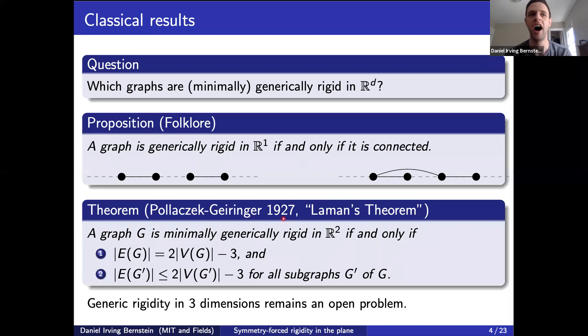In R^1, this is an easy characterization: minimally generically rigid graphs are trees. And there's the well-known theorem of Pollaczek-Geiringer-Laman in two dimensions, which gives a necessary and sufficient condition for a graph to be minimally generically rigid in R^2.